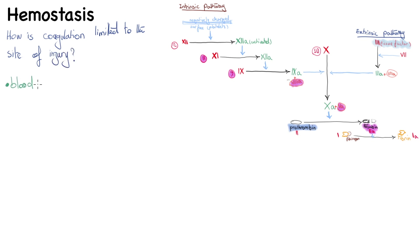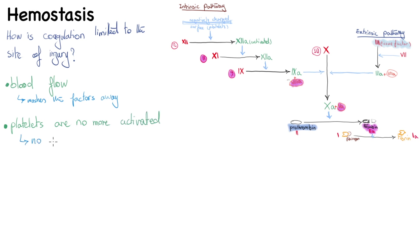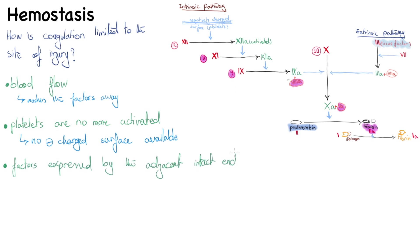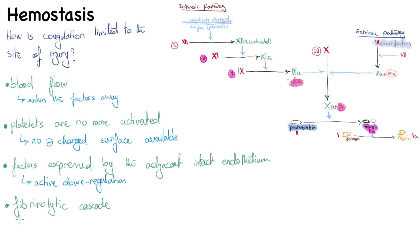Factors limiting coagulation include: blood flow, which dilutes and washes away coagulation factors from the site; platelets no longer being activated after a certain point, removing the negatively charged phospholipid surface; and factors expressed by intact endothelium adjacent to the injury site that actively downregulate coagulation.